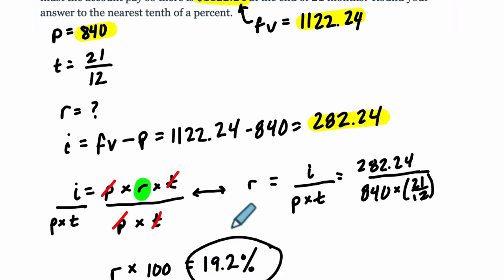So that's our interest rate right there. And we don't need the percent sign on Delta Math. Alright, I hope that helped.